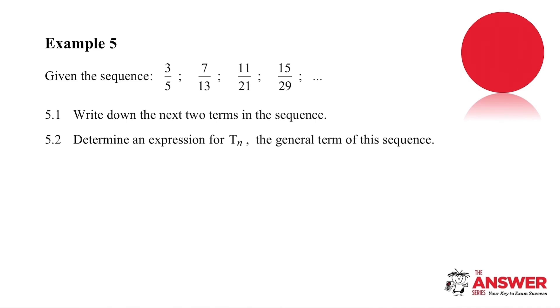Okay, so if you continue the row at the top, you'll notice that each term increases by 4. So we are simply going to go to 19 and then to 23. If we look at the denominators, we now have gaps at the bottom of 8 each time. So if we continue that, if we add 8 to 29, we're going to get 37. And if we add 8 to 37, we are going to get 45. So we have our next two terms.